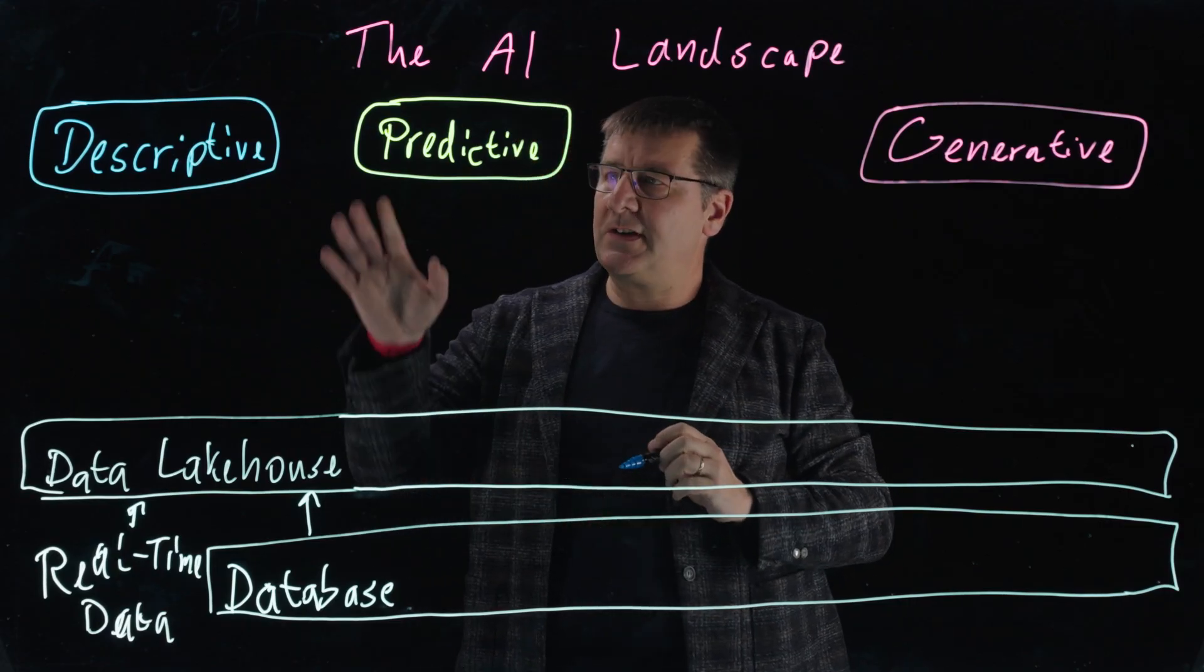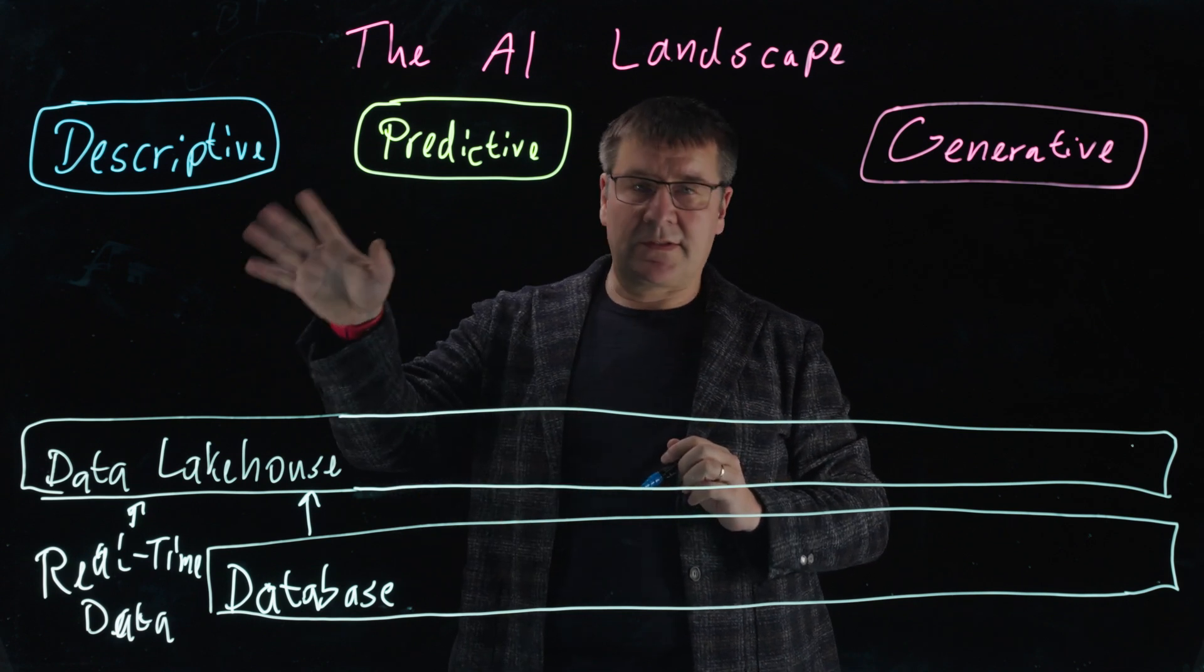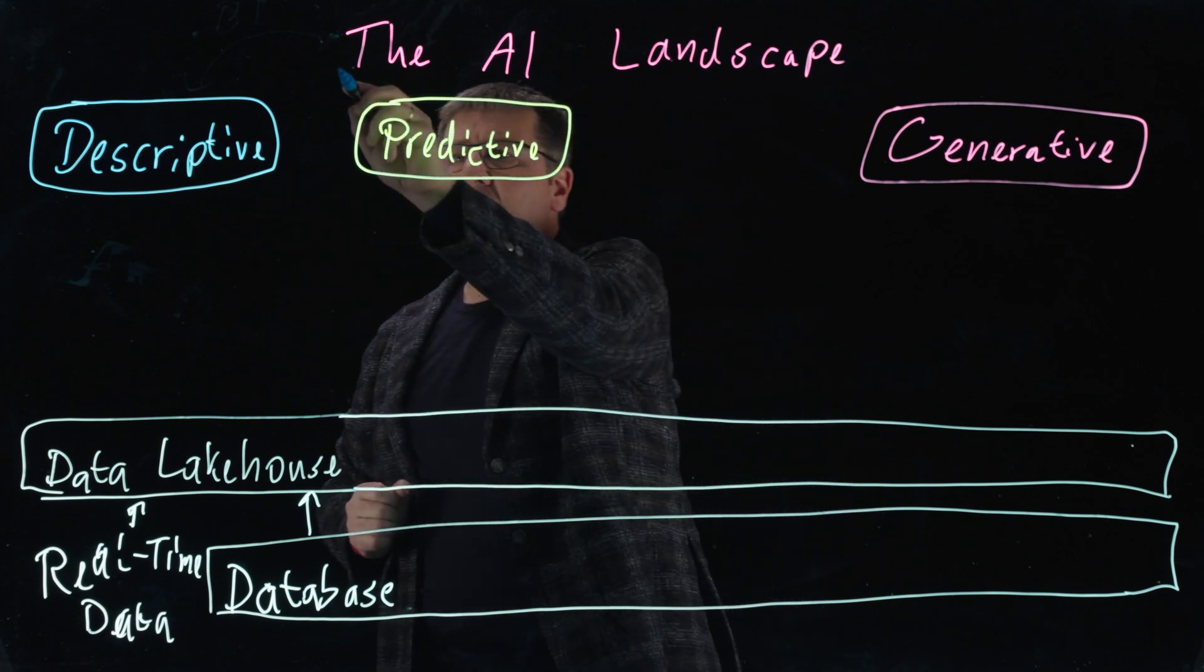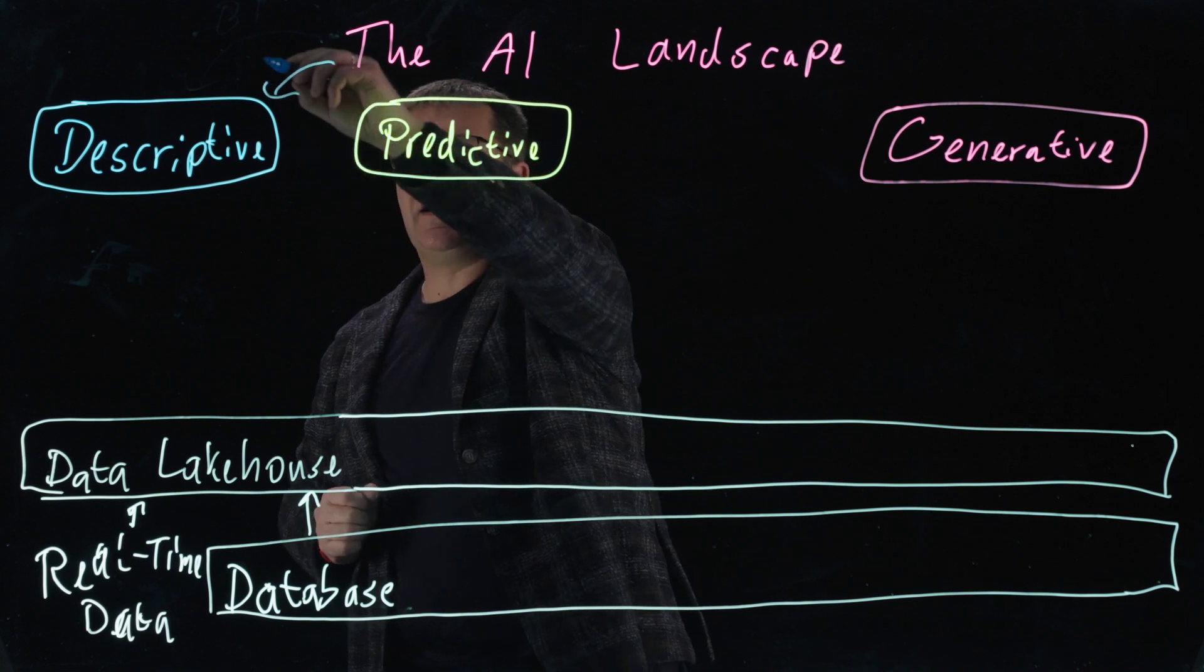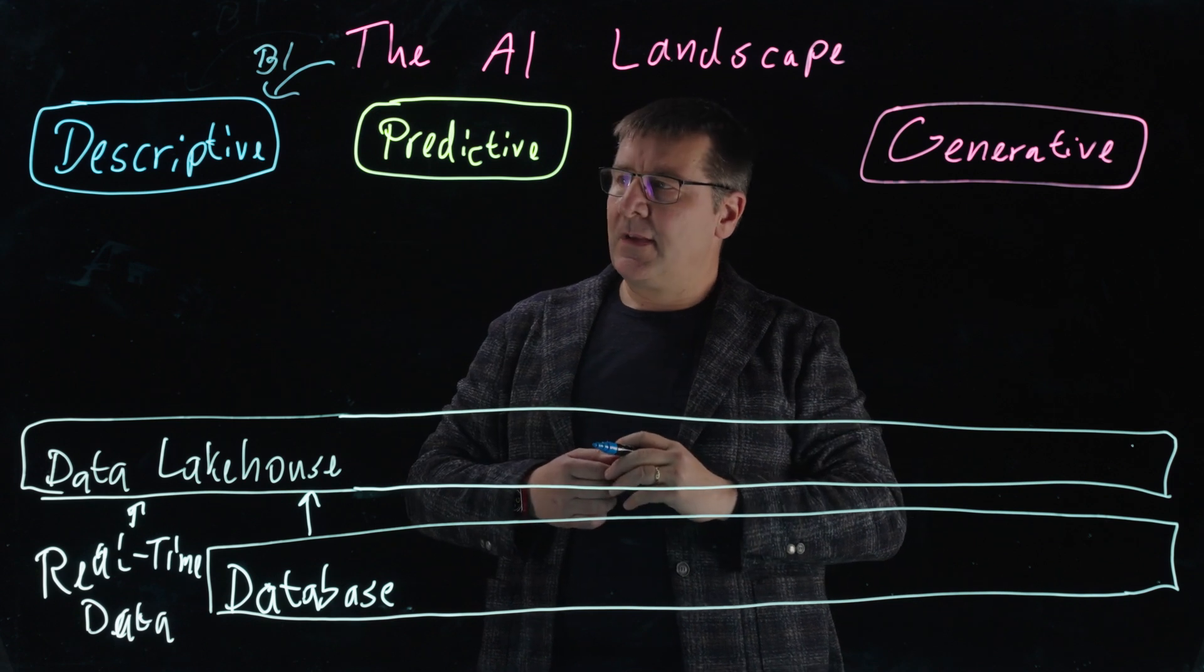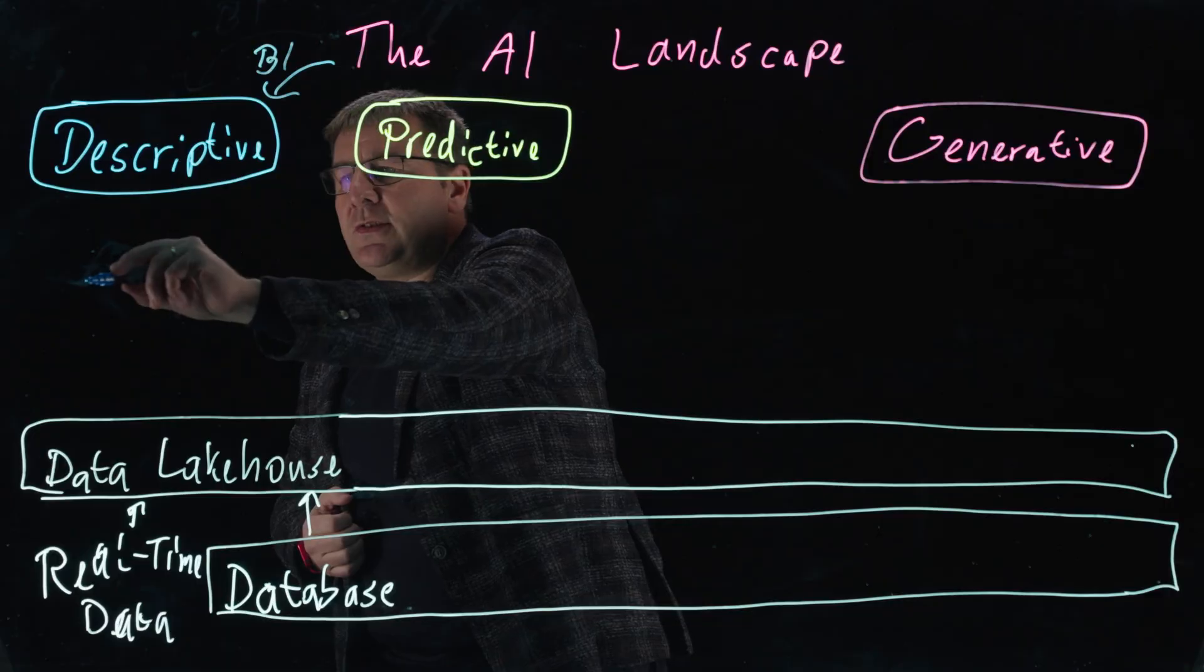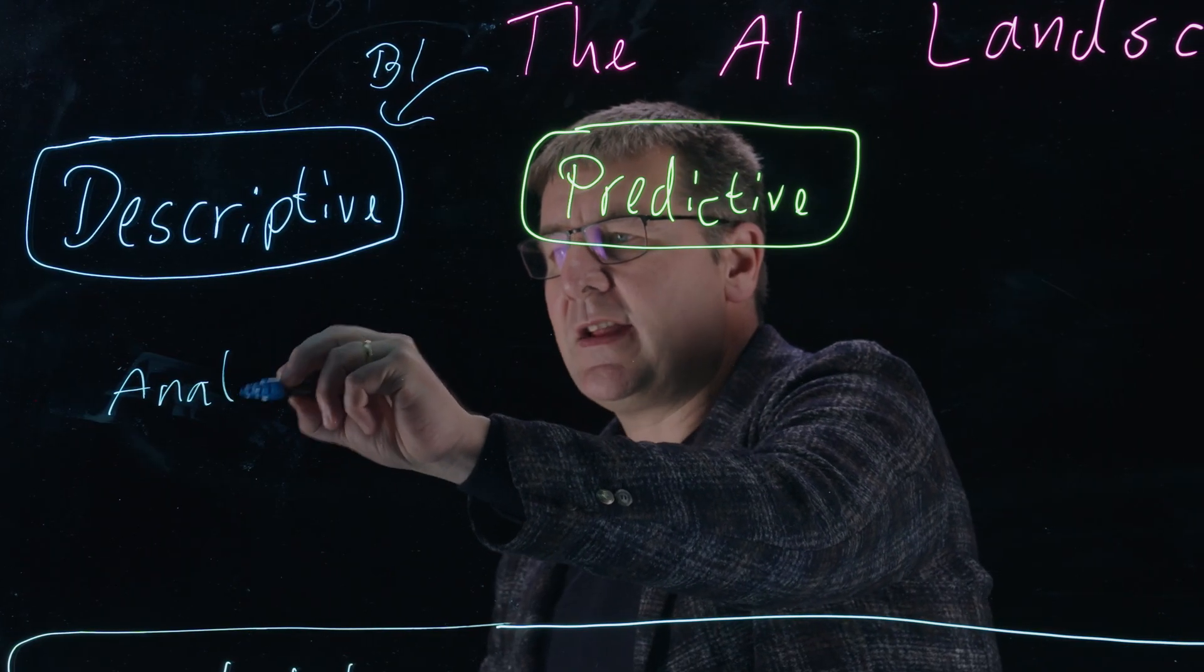Now let's take a look at how these different disciplines of AI are related to this data. We start with descriptive AI. Descriptive AI is actually not really called AI, but it's often referred to as BI, which stands for business intelligence. And with business intelligence, you're using analytics technologies.